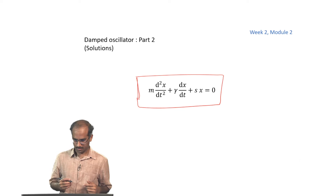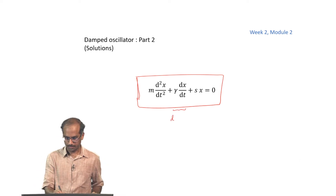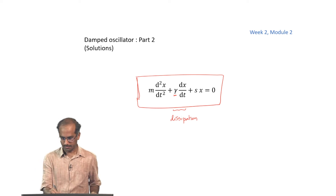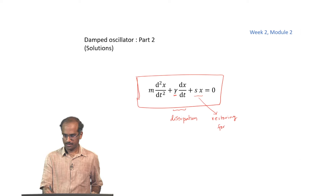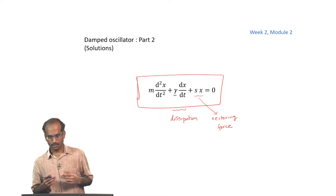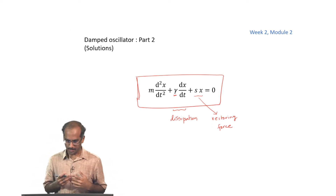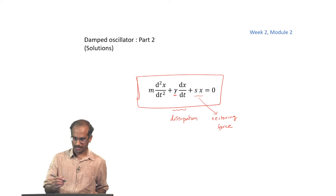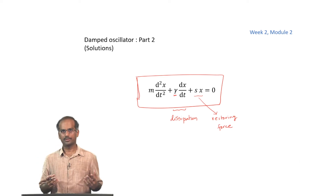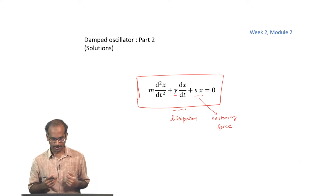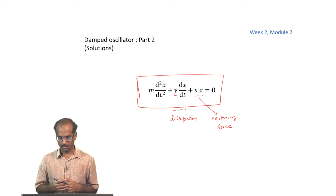Just to recall once again: the terms here are the one corresponding to dissipation — gamma here is the dissipation coefficient. This S multiplied by x is the term corresponding to restoring force, and S is the stiffness constant. We need this restoring force because without that you are not going to get oscillation. We motivated ourselves by saying that to get more realistic we need to add dissipation, which corresponds to the second term. Our model of dissipation is that the dissipation coefficient multiplied by velocity gives the dissipative force — in other words, the dissipative force is proportional to velocity.